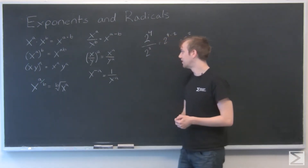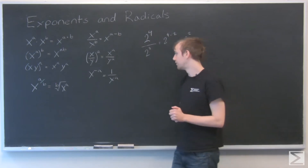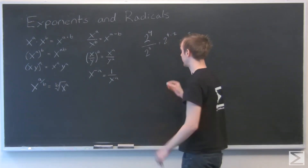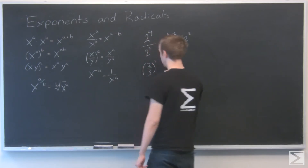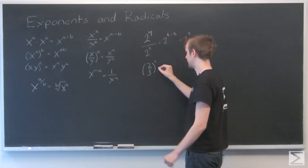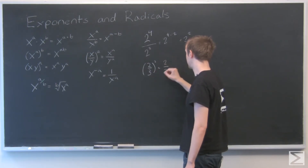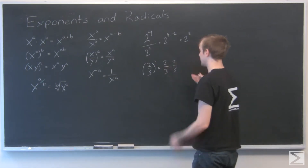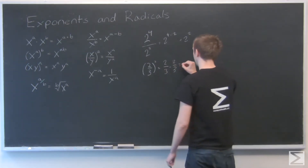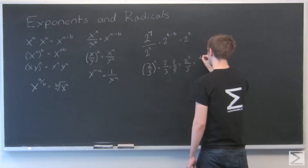Here is another rule: x over y to the a equals x to the a over y to the a. So if you have a fraction that's squared, we can see why: two thirds squared is the same as two thirds times two thirds. To multiply fractions, you multiply across the top and across the bottom — so that's 2 squared over 3 squared, which equals four ninths.